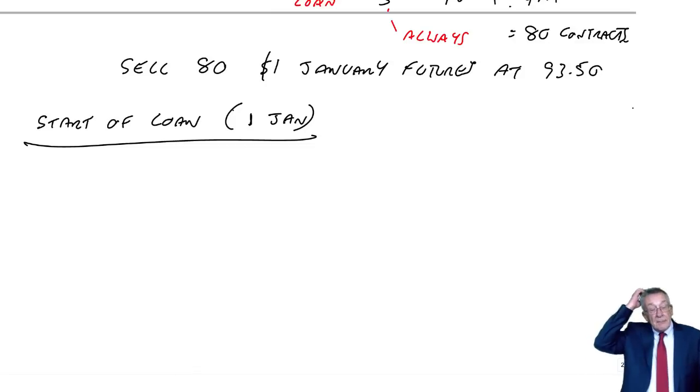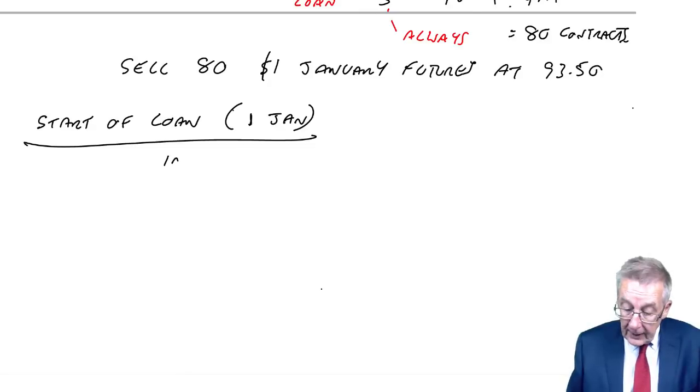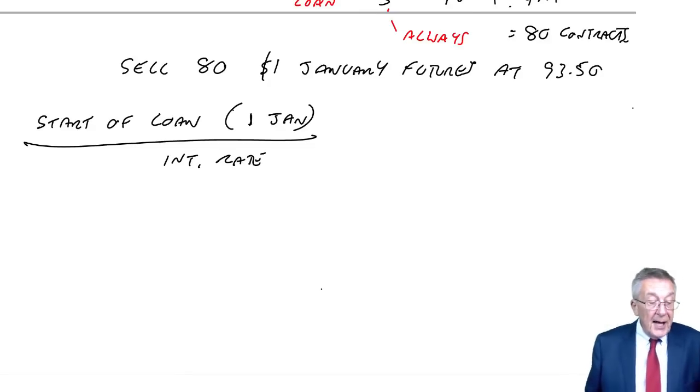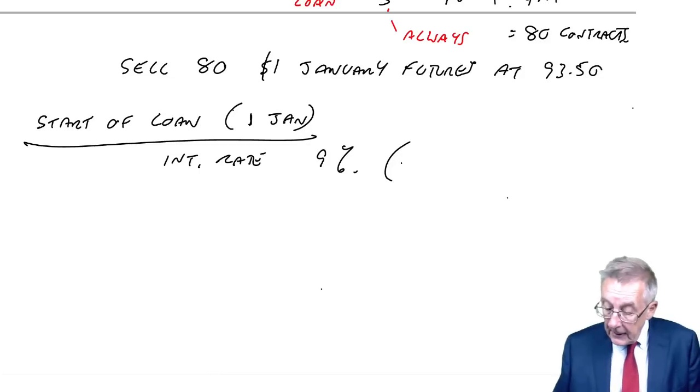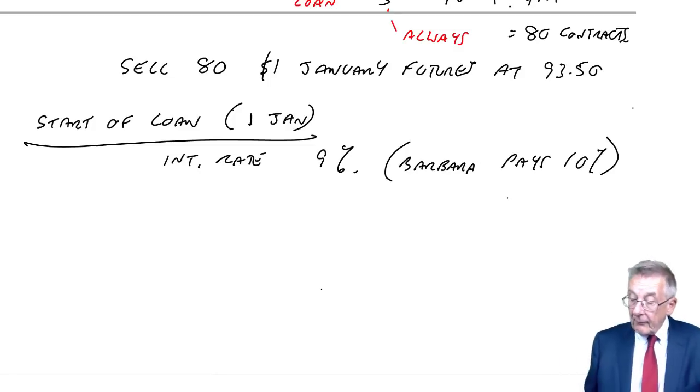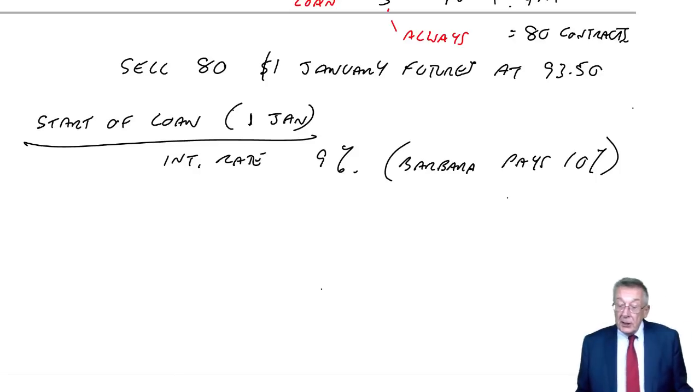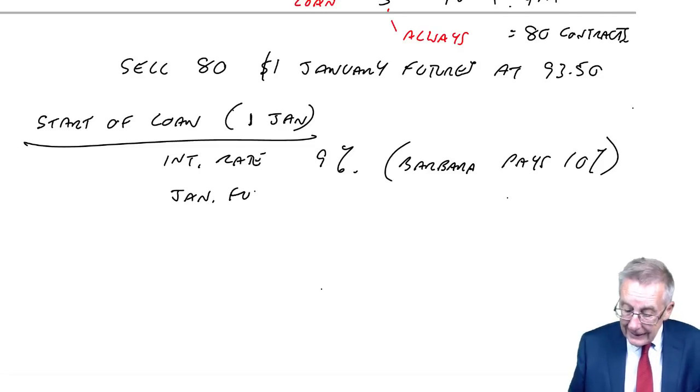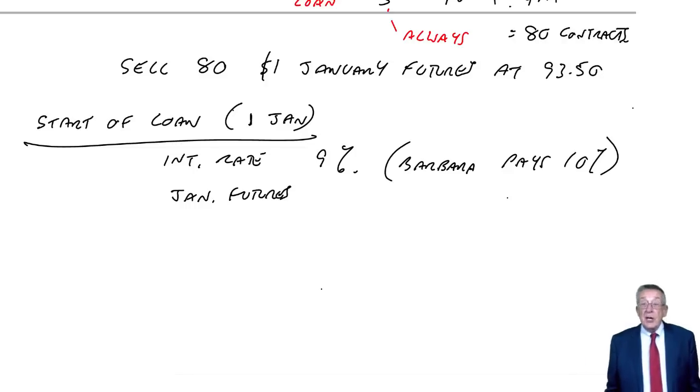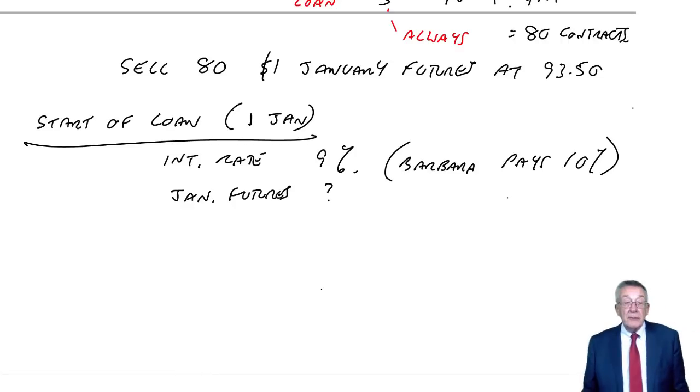We then sit back and wait until the start of the loan. To show what happens at the start of the loan, we need to know what the interest rate is. It does say assume that on the 1st of January LIBOR has risen to 9%. Remember Barbara always borrows at 1% more because of her risk. So in fact Barbara pays 10%. However, I also need to know the price of the January futures because just as the interest rate has changed, the futures prices have changed.